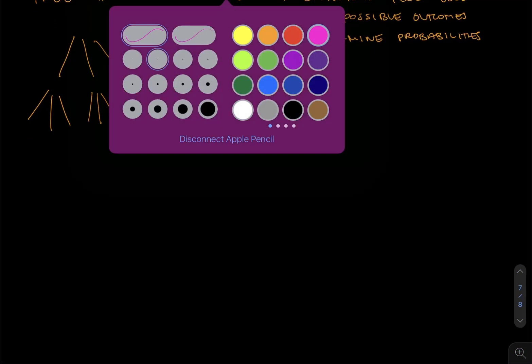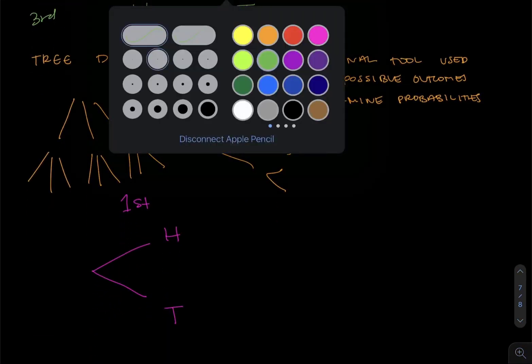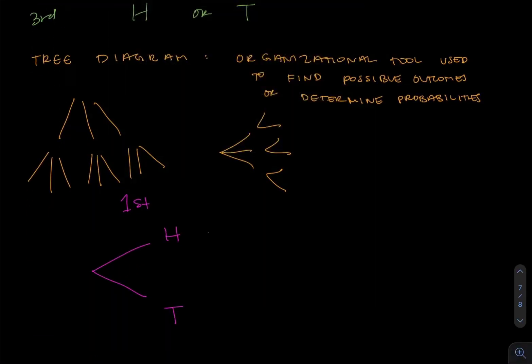When we're creating this tree diagram, we want to ask ourselves what's happening in the first toss, and we could get heads or we could get tails. Now that that first toss is complete, we want to ask ourselves, what can we get on the second coin toss? On the second coin toss, regardless of what we get on the first one, we can get heads or tails.